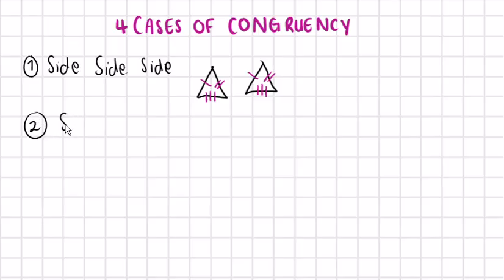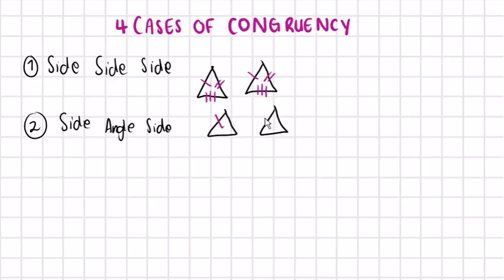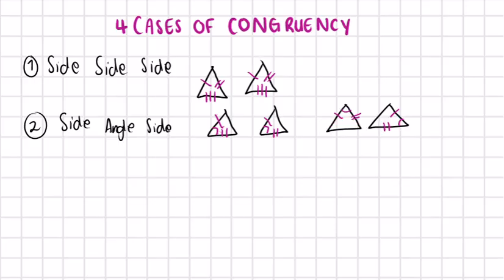The second case of congruency is side-angle-side. If we have two triangles where two sides are equal to each other, then an angle is equal, and then another side is equal, then these two triangles would be congruent. Remember the triangles do not have to be positioned in the same way to be congruent. If you pick one triangle up and flip it, you would see they are exactly the same.